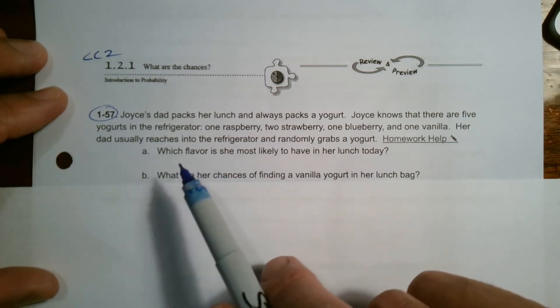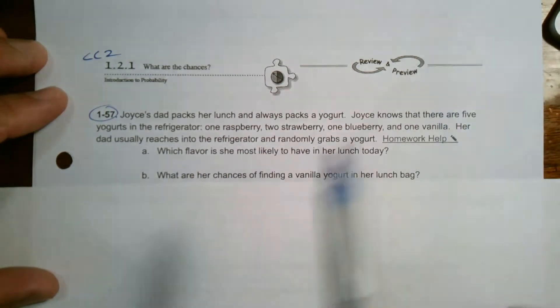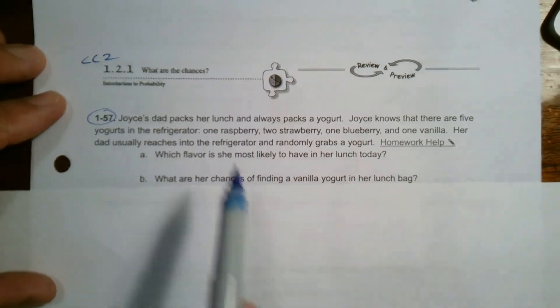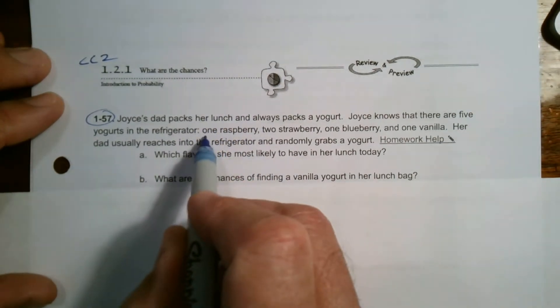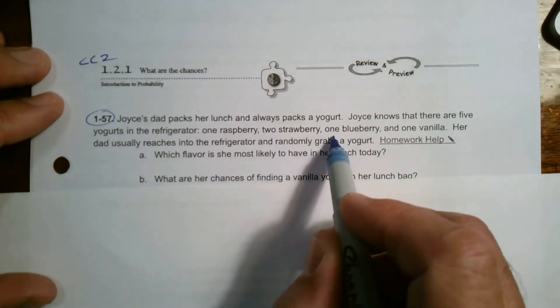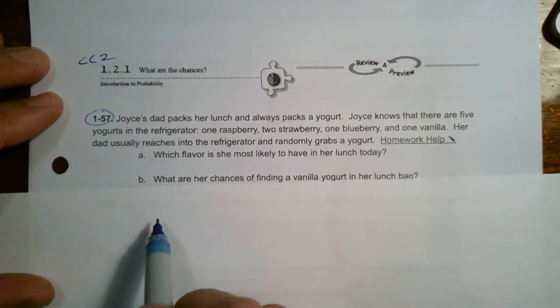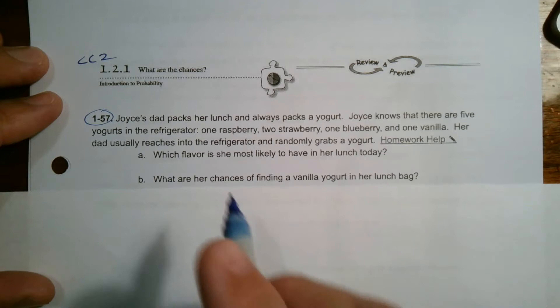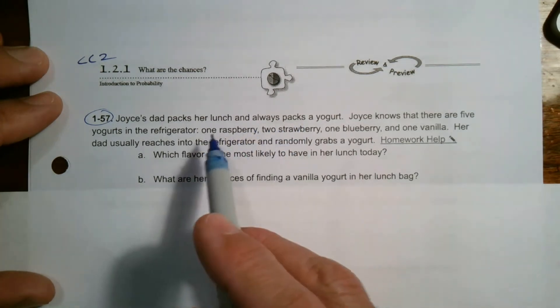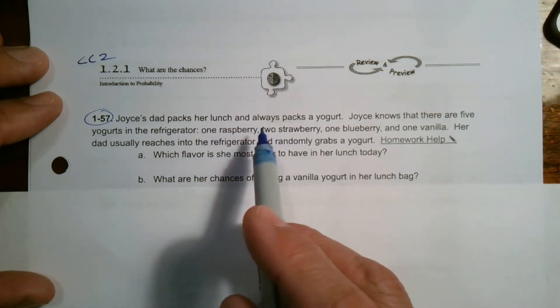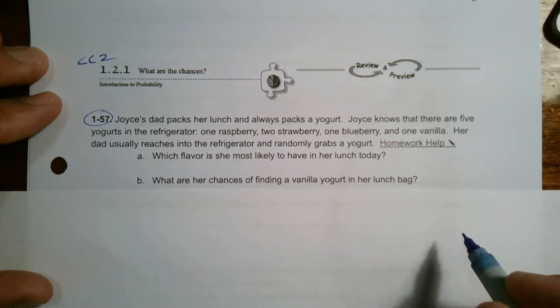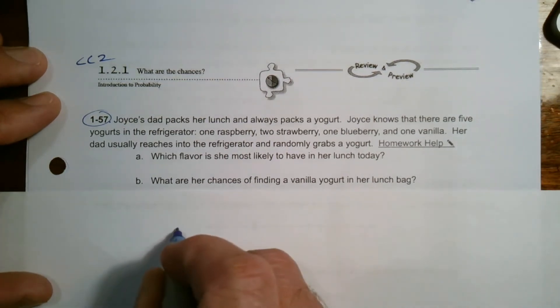So he's going to randomly grab one of those yogurts. There's only one raspberry, one blueberry, and one vanilla, but there are two strawberries. Which one's more likely? When you think about probability, let me write this down.